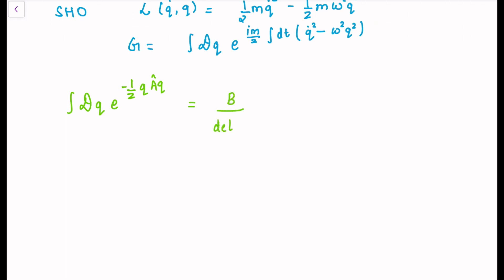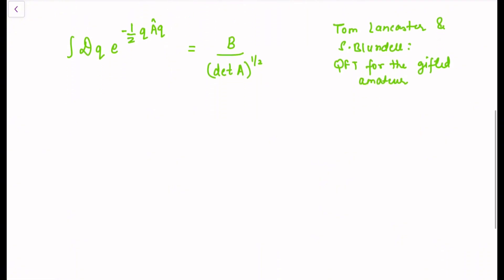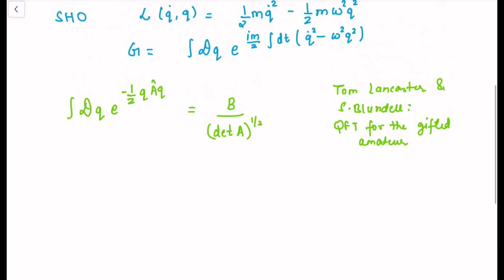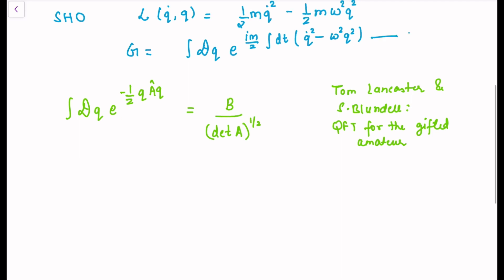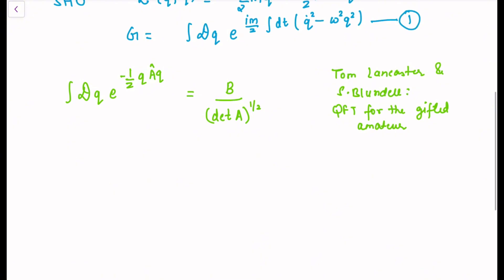This result can be found in Lancaster and Blundell's book 'QFT for the Gifted Amateur,' which describes nicely how this result comes about. In this video, however, we will not derive it. All we want to do is express our Gaussian integral — equation one — in this known form. So we need to massage the equation a little bit.